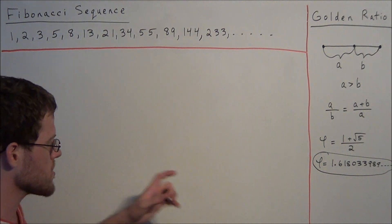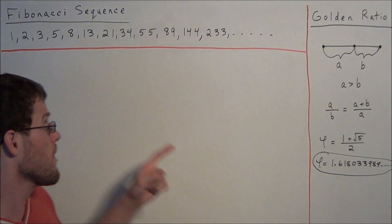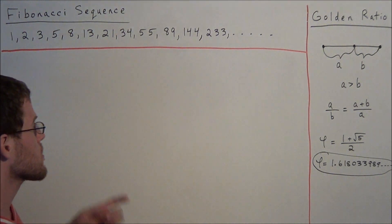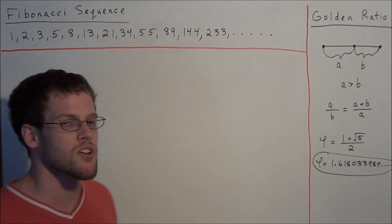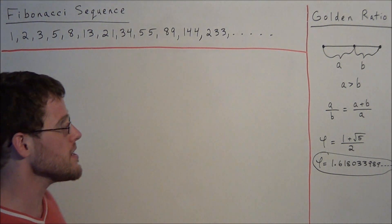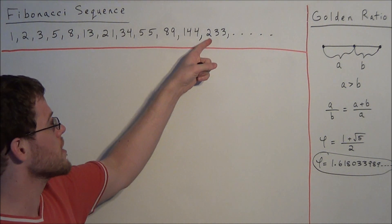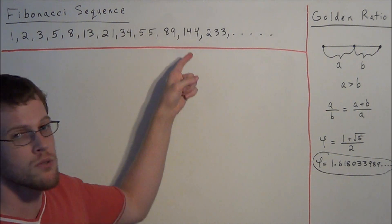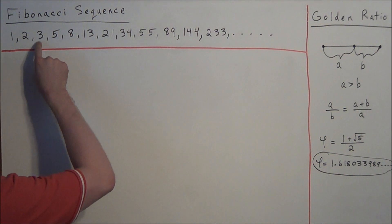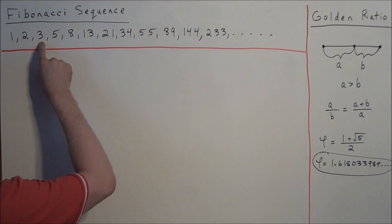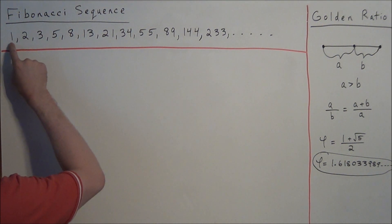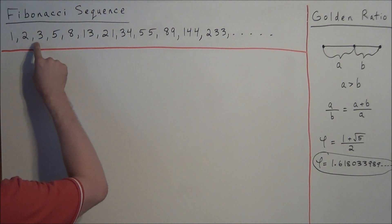So what is the connection between the golden ratio and the Fibonacci numbers? The Fibonacci numbers are a recursive sequence, which means each subsequent term is defined by the two terms before it. For example, 3 can be generated by looking at the two terms before it — 1 and 2 — and saying 1 plus 2 equals 3.